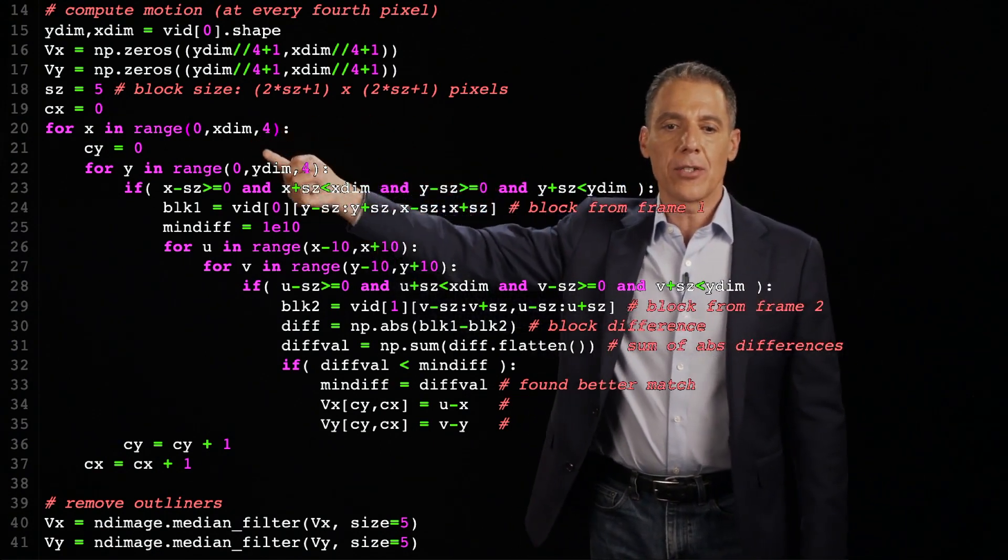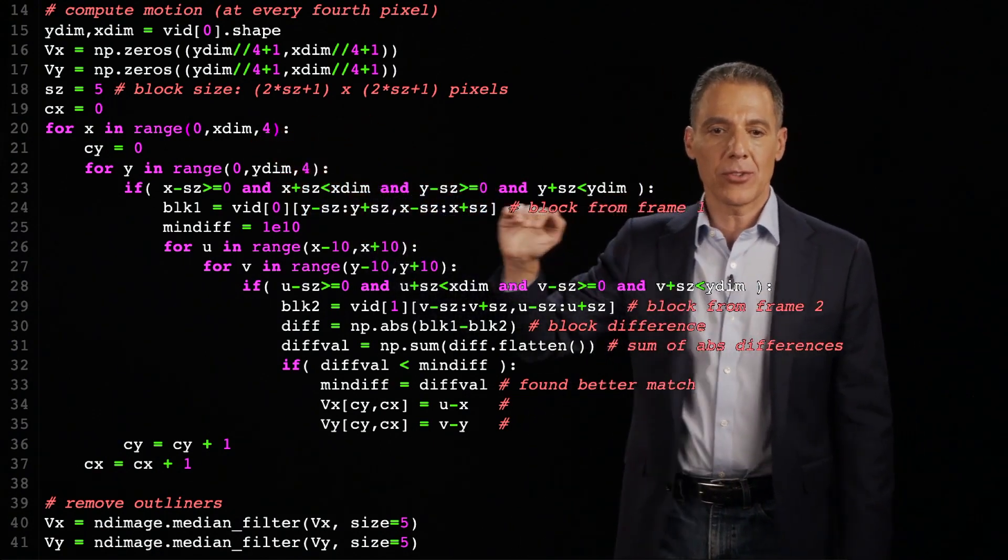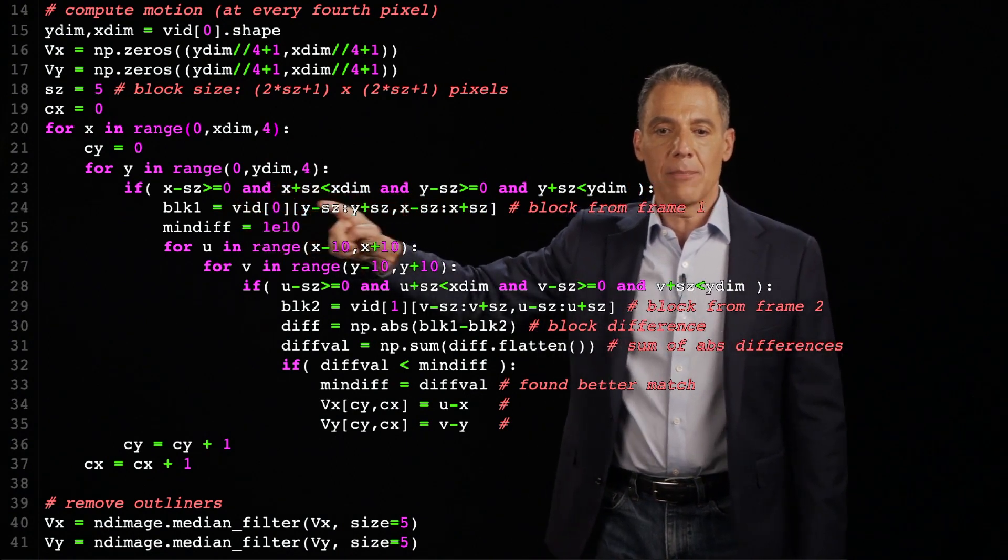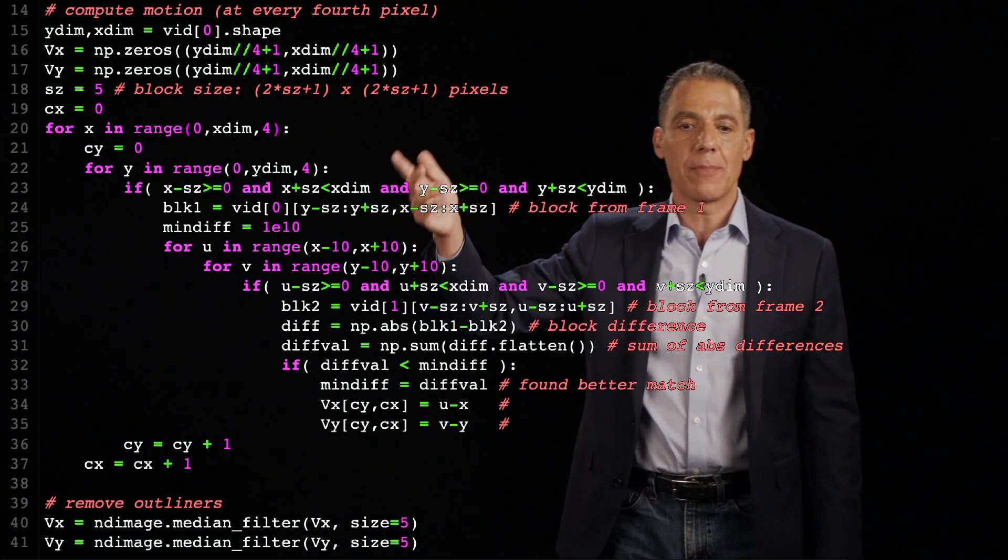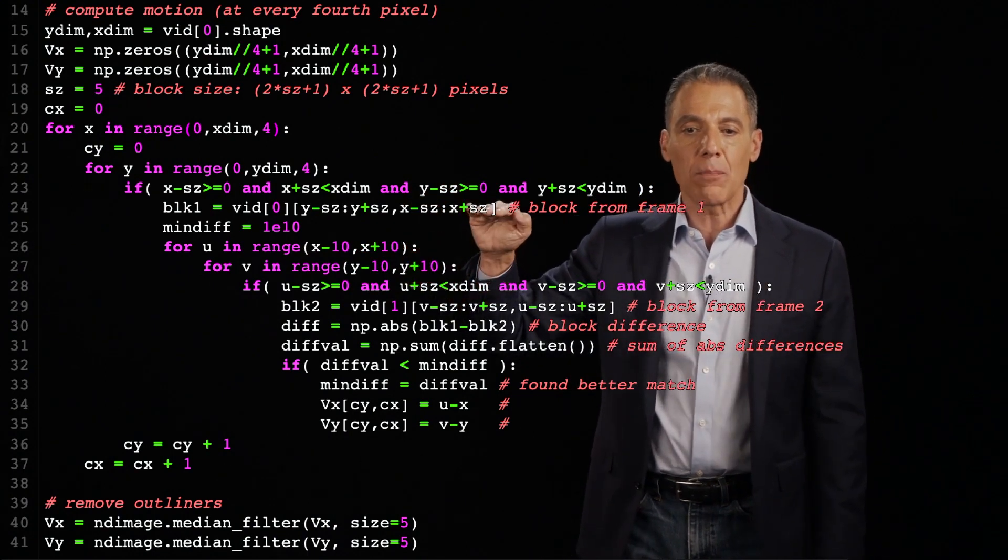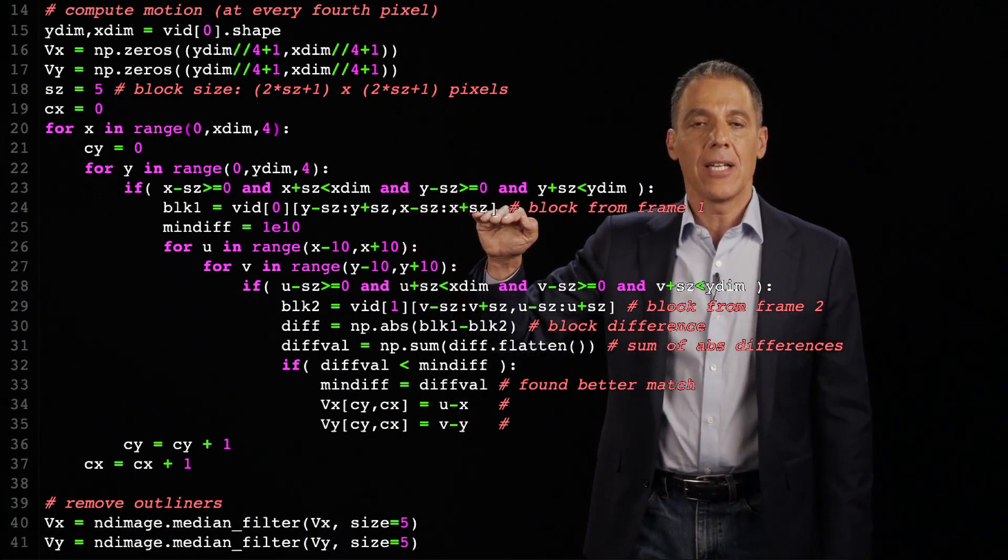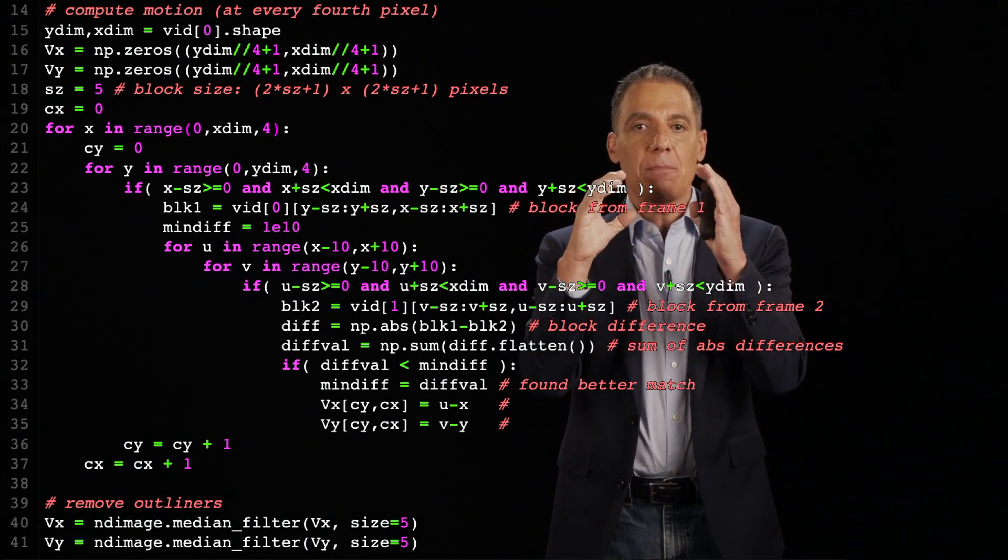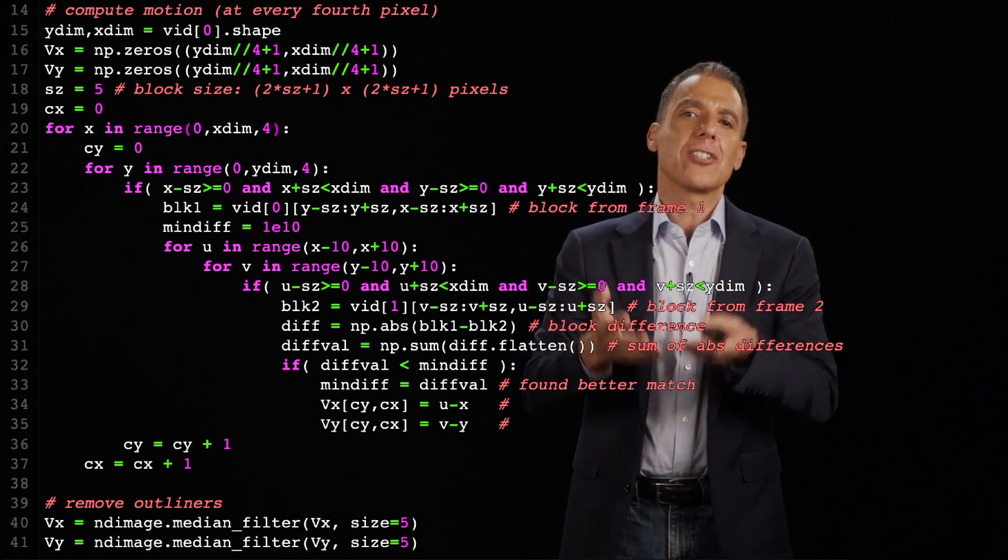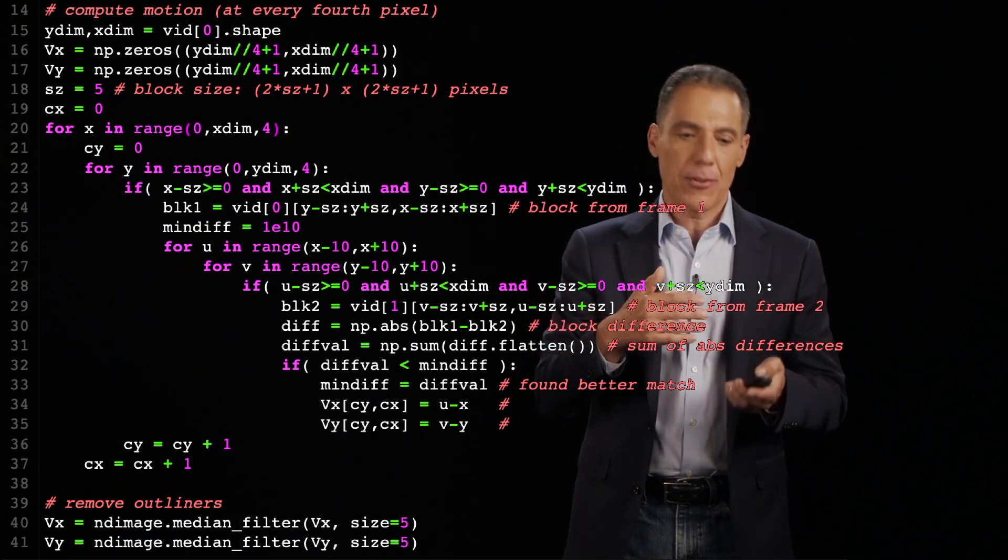So this loop here is going through all the pixels. And then what I'm saying is making sure I'm in bounds here so I'm not looking at any pixel that is out of bounds. I grab the little box, a little block that corresponds to a five by five patch of image. Why five? That's just one that I picked.